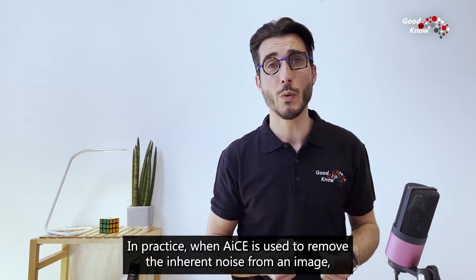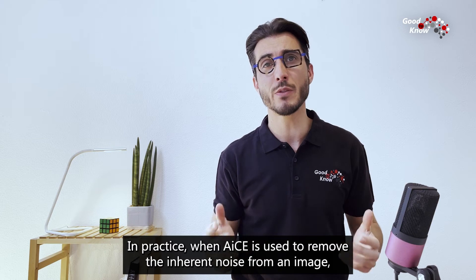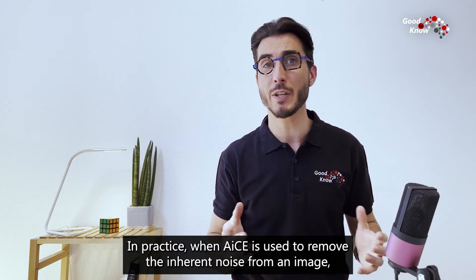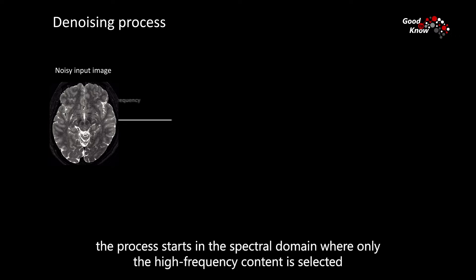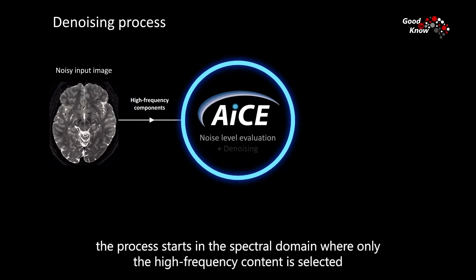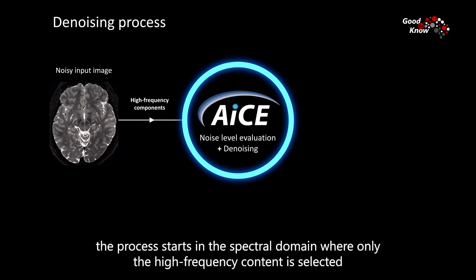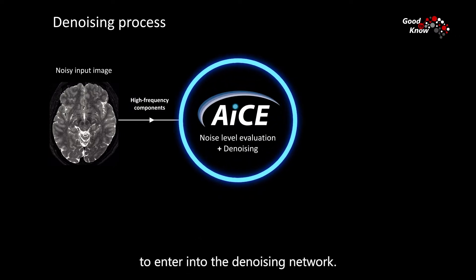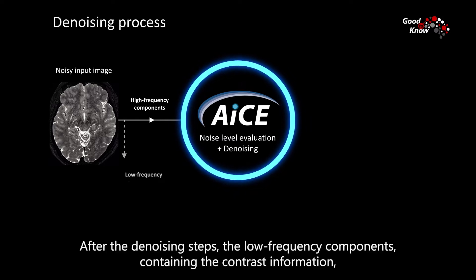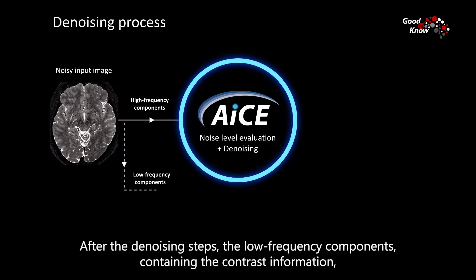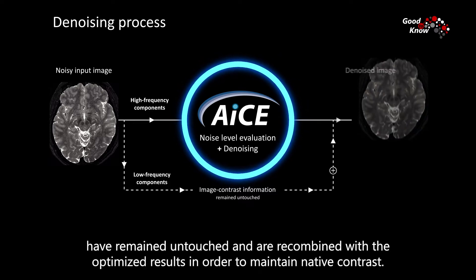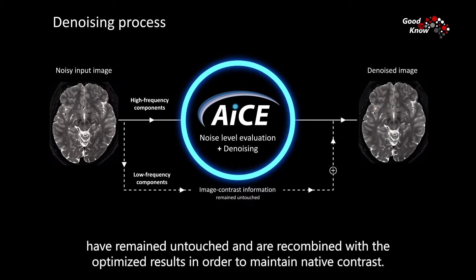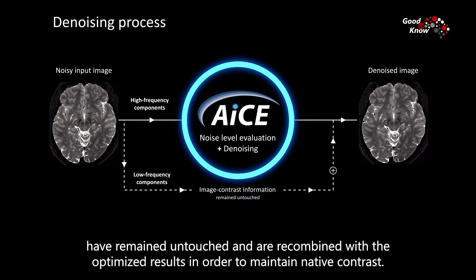In practice, when AICE is used to remove the inherent noise from an image, the process starts in the spectral domain where only the high-frequency content is selected to enter into the denoising network. After the denoising steps, the low-frequency components containing the contrast information have remained intact and are recombined with the optimized results in order to maintain native contrast.